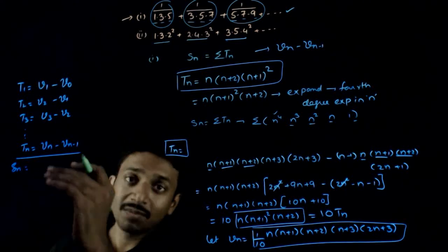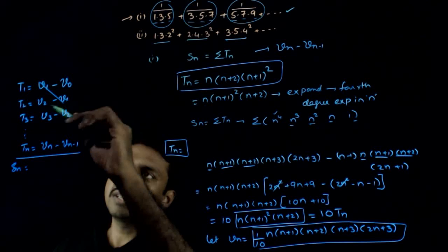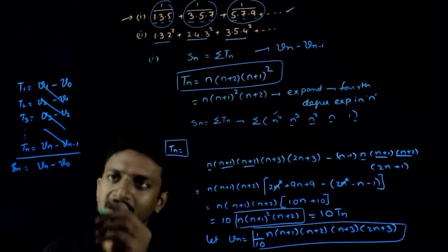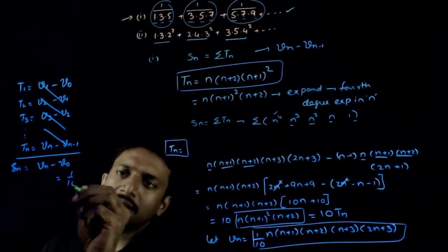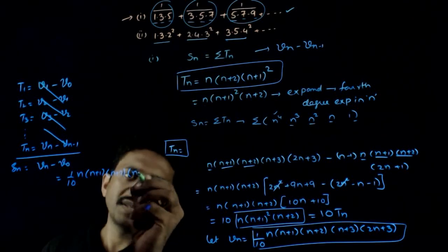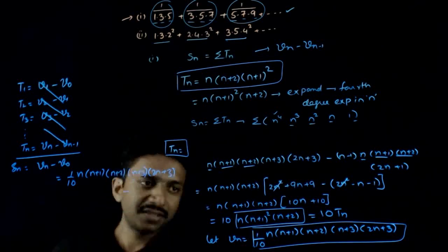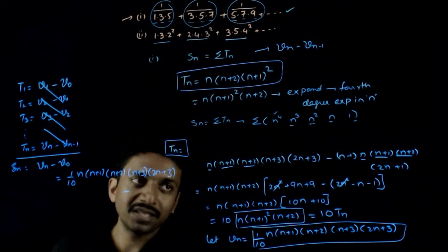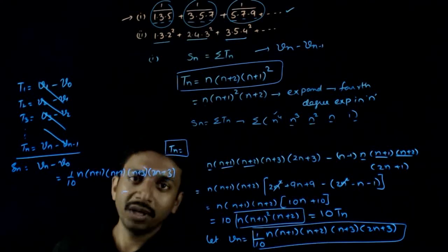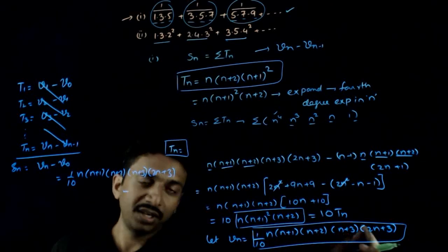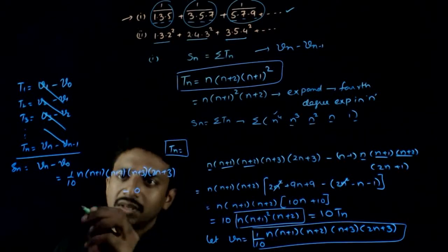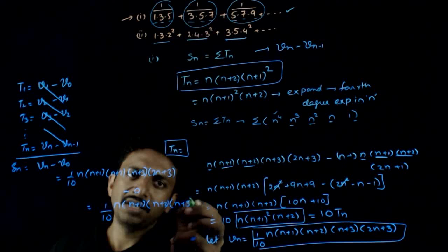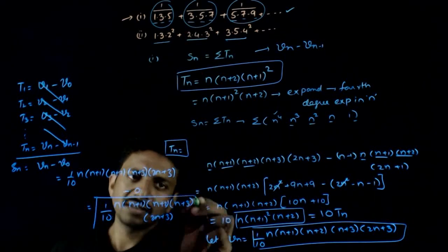If I want Sn, it is the sum of all these expressions. Telescoping cancellations occur, so Sn = Vn − V0. Now V0 means putting n = 0: 0×1×2×3×... = 0. Therefore Sn = (1/10) × n(n+1)(n+2)(n+3)(2n+3).